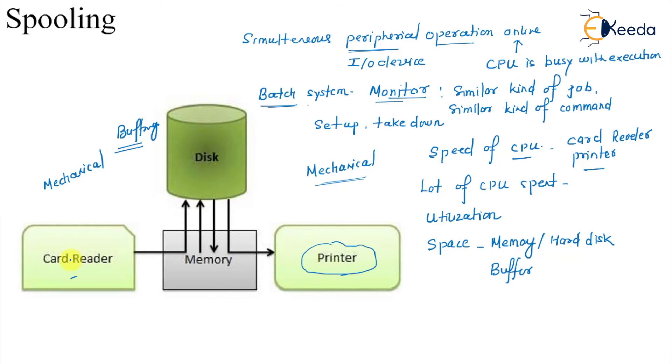The card reader data directly goes from card reader to disk or buffer at whatever speed we can read the card reader. And then finally the data goes from the disk to memory and memory to the printer.